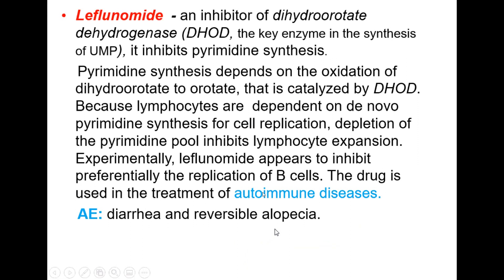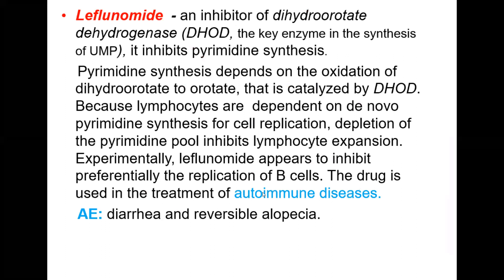Leflunomide is also an antimetabolite drug. Its mechanism of action is inhibition of dihydroorotate dehydrogenase, the key enzyme in the synthesis of UMP — pyrimidine synthesis — and nucleic acids. It can be used to treat autoimmune disorders. Adverse effects include effects on rapidly dividing cells: diarrhea, gastrointestinal epithelial damage, and reversible alopecia.